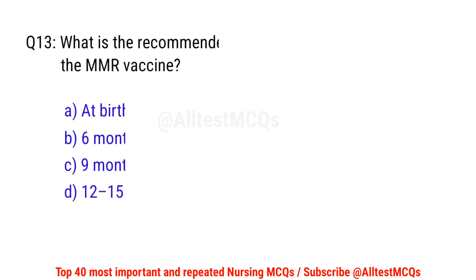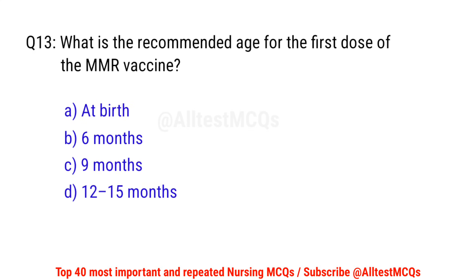Question No. 13: What is the recommended age for the first dose of the MMR vaccine? The right option is D: 12 to 15 months.